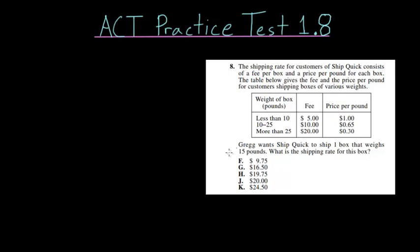This first column, weight of box in pounds, allows us to see which of these rows we fall into: either less than 10 pounds, 10 to 25 pounds here in the middle, or more than 25 pounds. Now since we have a 15-pound box, we would fall into this middle row here. Once you know the weight of your box and which row it falls into, then you know how much the fee is and the price per pound.